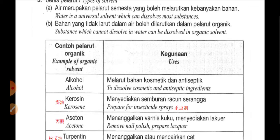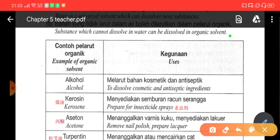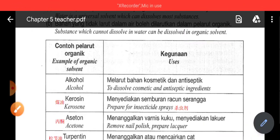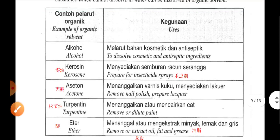里面的 substance 要怎样被溶解呢，它们可以用 organic solvent。Organic solvent 就是一些天然的溶剂，下面有给你 example 的。好像，看第一个，alcohol，alcohol 就是酒精，酒精也是其中一个 organic solvent。